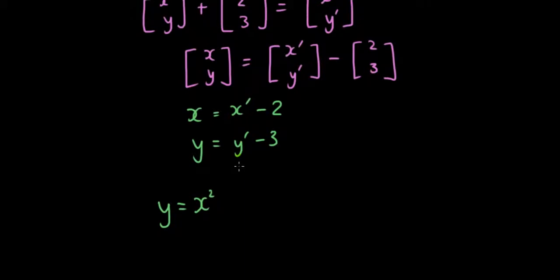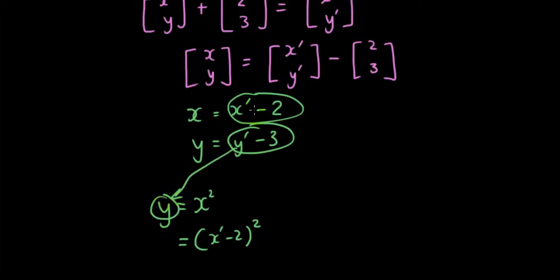So if x' minus 2 will give us the original x, I'm going to substitute x' minus 2 over here, and I'm going to substitute y' into y. x' minus 2 is substituted into x, y' minus 3 is substituted into y.